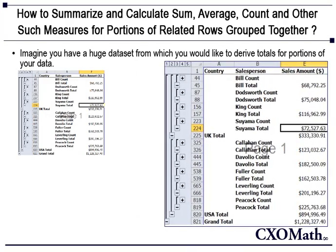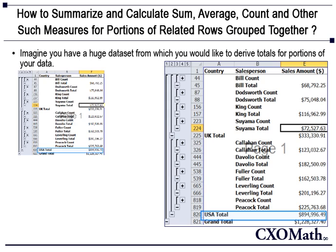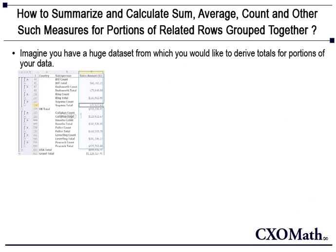Subtotal helps you find the sum of filtered values. It summarizes the data and generates sum, count, average, or standard deviation — in fact, it has about 11 functions to choose from. In subtotal, you can choose the column on which to base your subtotal, the summary calculation or function you want to perform, and the column or columns with values that need to be summed, counted, or averaged based on the column specified.